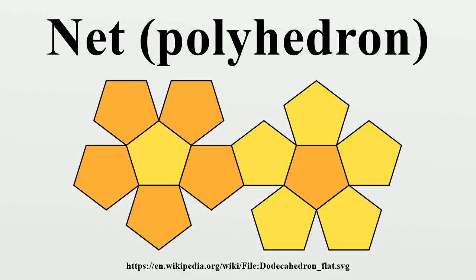In geometry, the net of a polyhedron is an arrangement of edge-joined polygons in the plane which can be folded to become the faces of the polyhedron. Polyhedral nets are a useful aid to the study of polyhedra and solid geometry in general, as they allow for physical models of polyhedra to be constructed from materials such as thin cardboard.